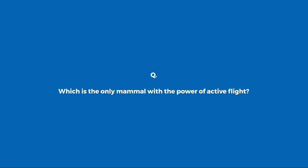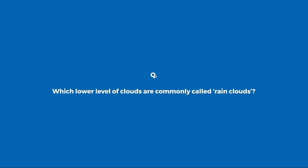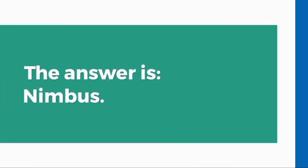Which is the only mammal with the power of active flight? Bat. Which lower level of clouds are commonly called rain clouds? Nimbus.